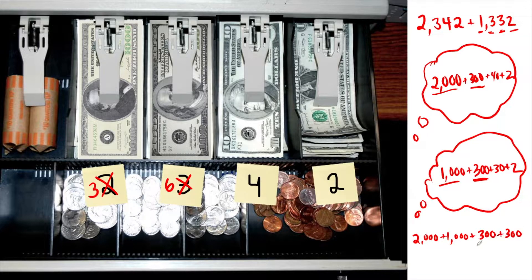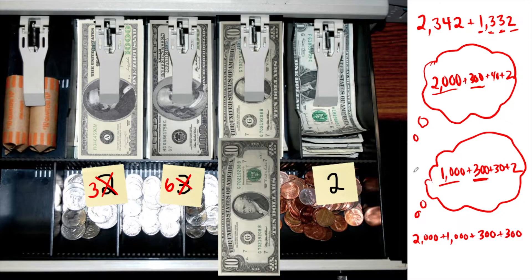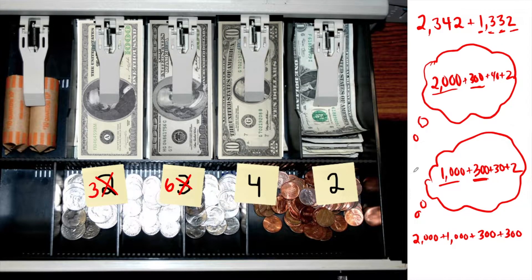You can see where this is going. I'm adding it up, place value by place value. Now I add the tens place. I had 40 and I want to add 30 more, 40, 50, 60, 70. This is 70. Instead of four $10 bills, I have seven. That's like adding the 40 plus the 30.